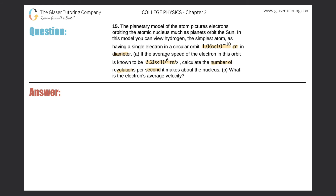Why don't we draw a simple picture? Here's our nucleus and we have an electron orbiting that particular nucleus — here out here I have my electron. Now it says that the diameter of this circular orbit is 1.06 times 10 to the minus 10 meters.